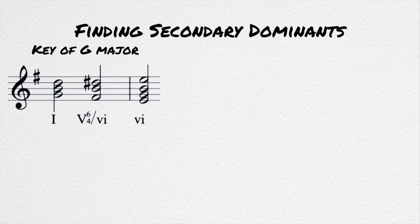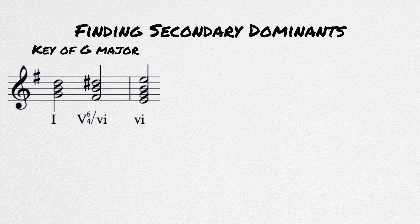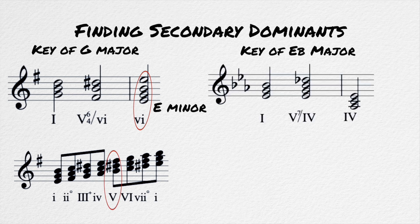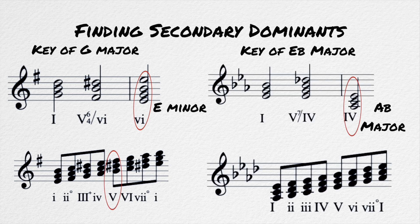It is easiest to find these chords if you imagine that you are in the key of the target chord for a moment. If the chord you are going to is E minor, imagine you are in E minor, and then find the dominant, B7. If you are going to A flat major, imagine you are in that key, and find the dominant, E flat 7.